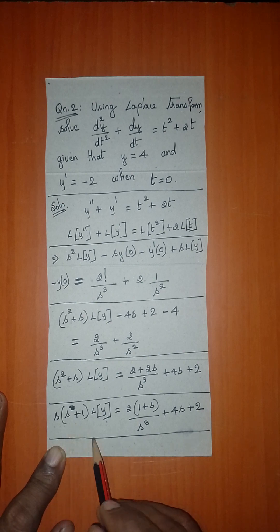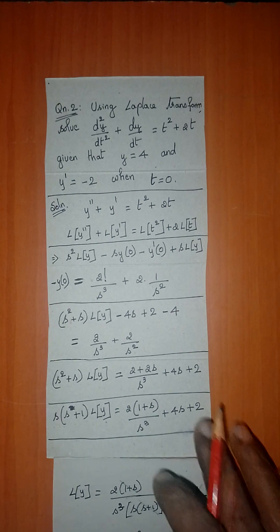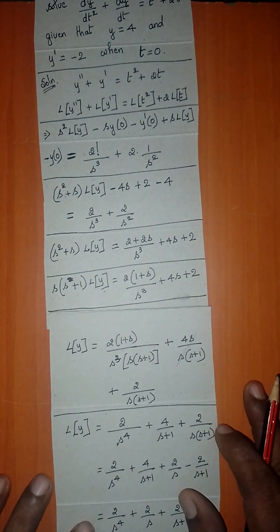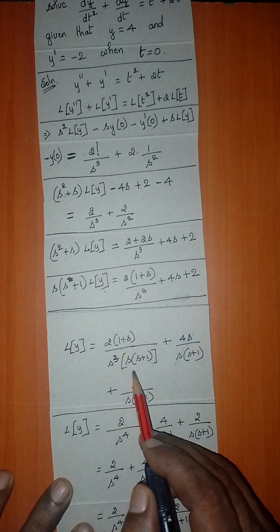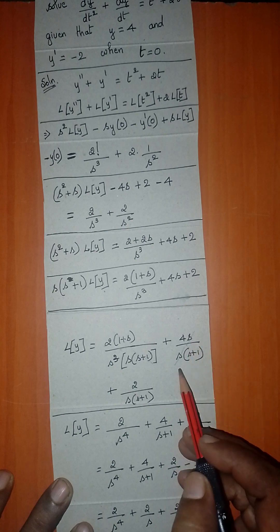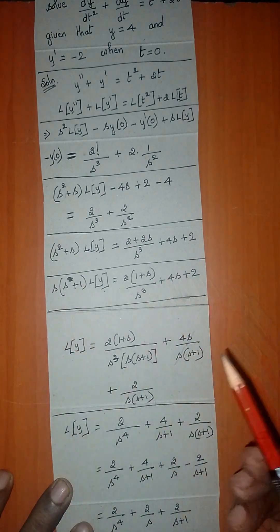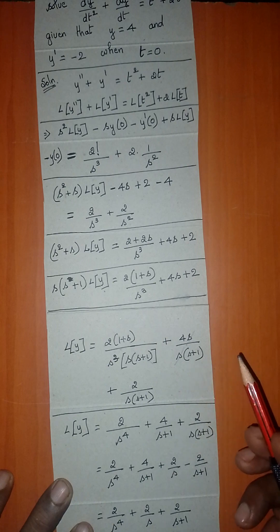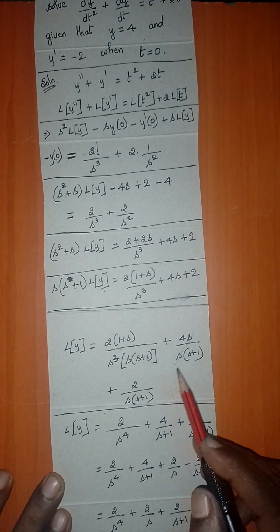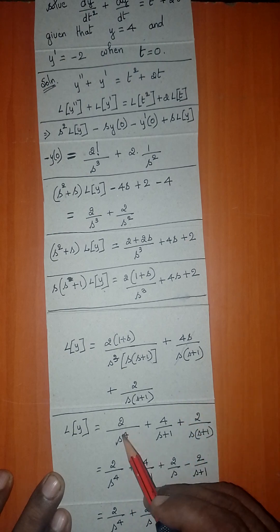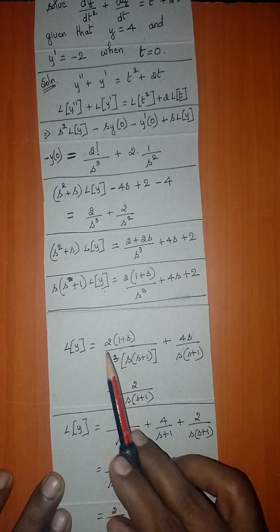Dividing throughout by s(s + 1) to isolate L{y}, the right hand side becomes: 2(1 + s) / [s³ · s(s + 1)] + 4s / [s(s + 1)] + 2 / [s(s + 1)]. After simplification, (1 + s) cancels with (s + 1) giving 2/s⁴; s cancels in the second term giving 4/(s + 1); and the last term is 2/[s(s + 1)].